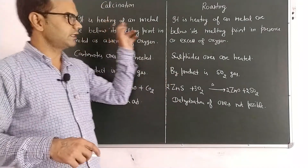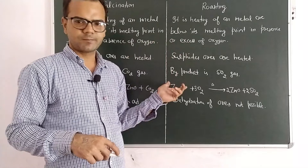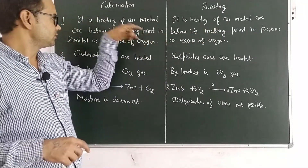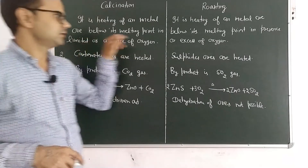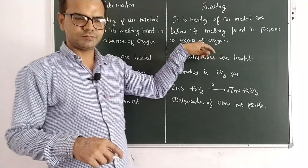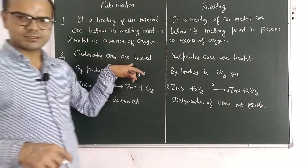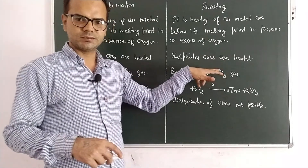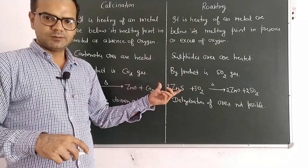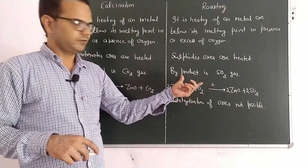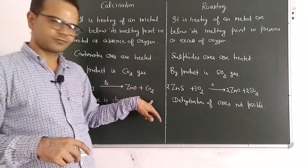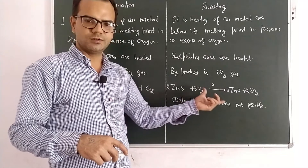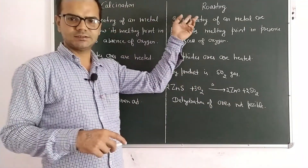So that is the concept of calcination versus roasting. Similarities: metal ores are heated in both, and metallic oxides are produced in both. Differences: calcination uses absence or limited supply of oxygen, while roasting uses presence or excess of oxygen. Calcination heats carbonate ores, roasting heats sulphide ores. Byproduct in calcination is CO₂; byproduct in roasting is SO₂. In calcination moisture is driven out; in roasting there is no dehydration of ores.